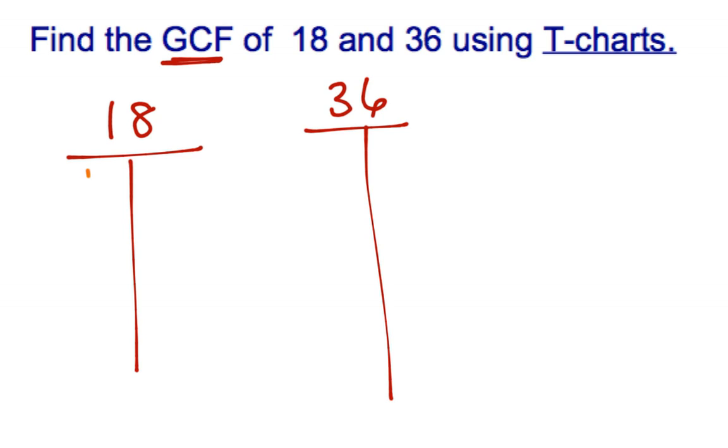Remember we use this to help us count systematically. So 1 times what number is 18? 1 times 18. Does 2 go into 18? Yes, it's even. 2 times 9. Does 3 go into 18? 1 plus 8 is 9, so 3 goes into that number. 3 times 6.